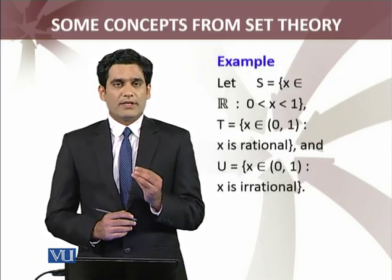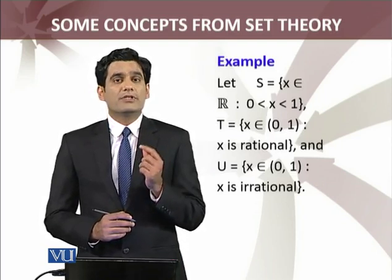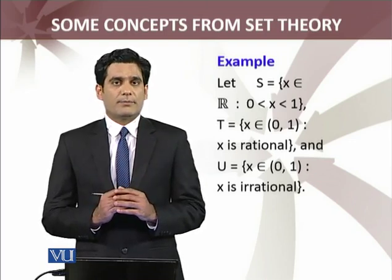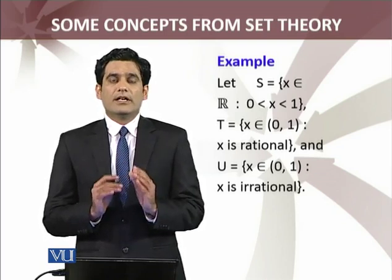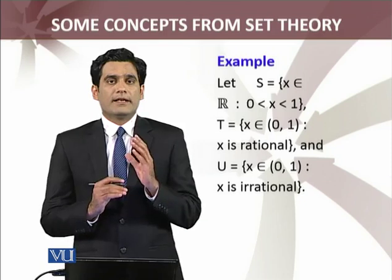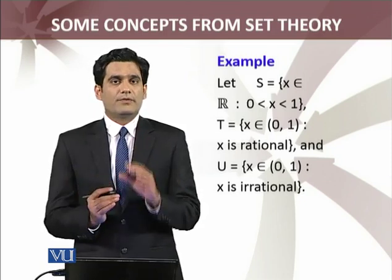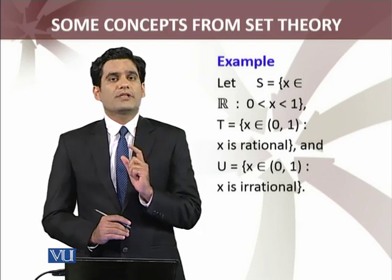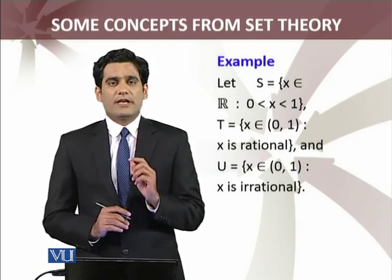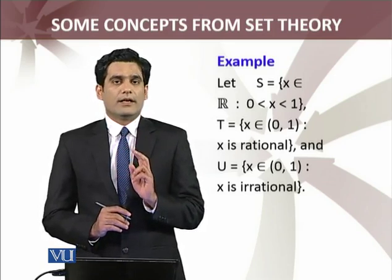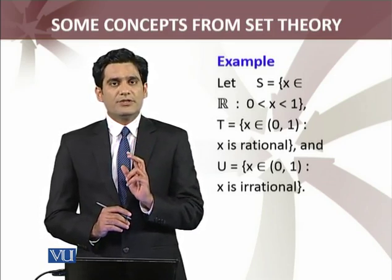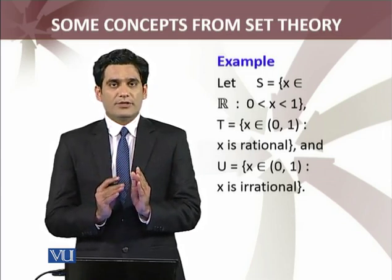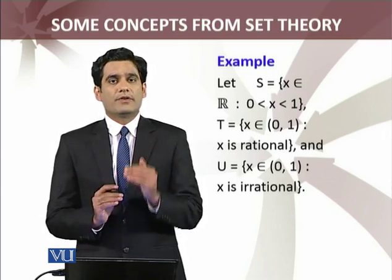I am going to start with a simple example in which I have defined a set S, which is the set of real numbers between 0 and 1. Set of real numbers के बारे में, set of real numbers is the union of set of rational numbers and set of irrational numbers. यहाँ T और U दो sets define किये हैं — T is the set of rational numbers between 0 and 1, and U is the set of irrational numbers between 0 and 1. Obviously, the set S, which is all real numbers between 0 and 1, it is the union of T and U.